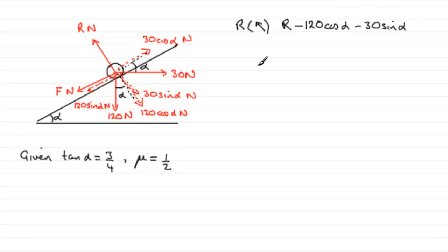Now, this is the resultant force acting on the particle, but because it's in equilibrium, there's no acceleration. There's no resultant force. So it equals zero. So therefore, I can find out what r is by rearranging this and saying that r equals 120 cos alpha plus 30 sine alpha.